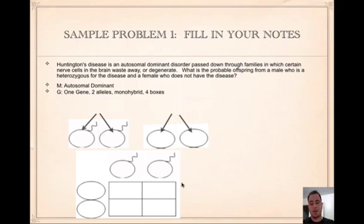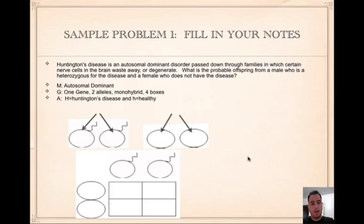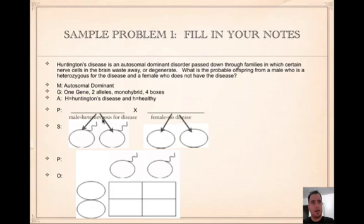What are the alleles? The disease is dominant, so big H is the allele for Huntington's disease because it's dominant, and little h is healthy — not having the disease. Then we figure out the parents. The male is heterozygous for the disease, meaning one capital and one lowercase, so big H little h. The female does not have the disease, so she must be little h little h — if she had big H, it would be dominant and she'd have the disease.